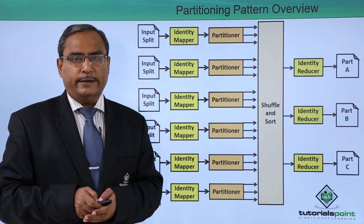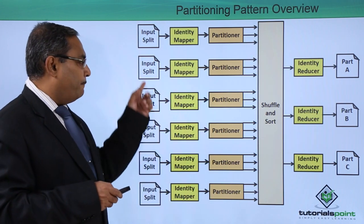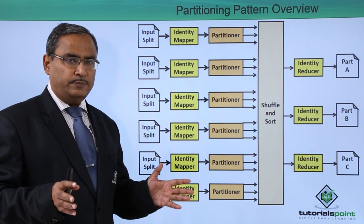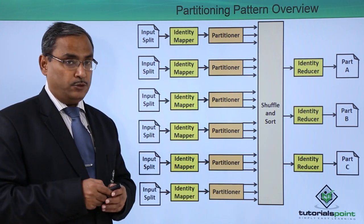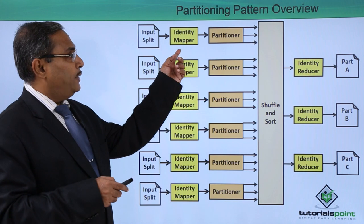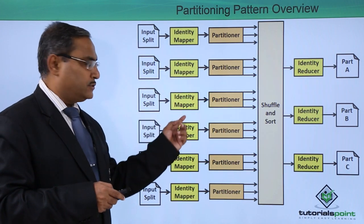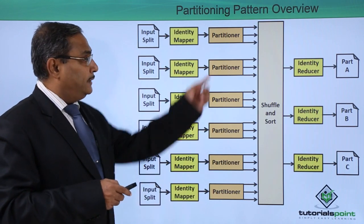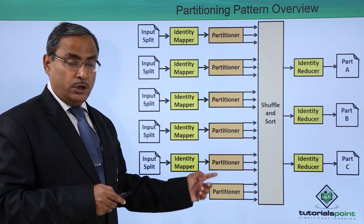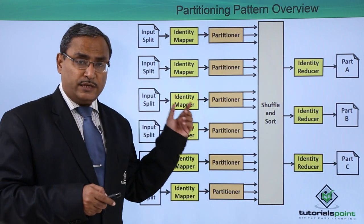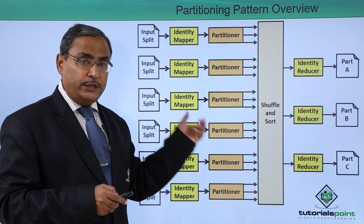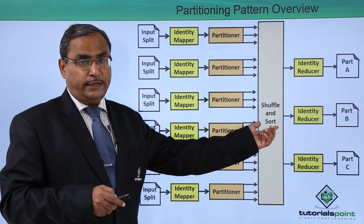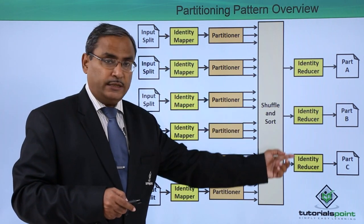Let us go through one diagram. Here we are having multiple input splits — depending upon the size of the dataset, the number of splits is decided. Then we have identity mappers, with multiple mappers working with each one of the input splits. Then we have the partitioner, which is responsible for knowing which partition will be handled by which reducer. Shuffling and sorting takes place here.